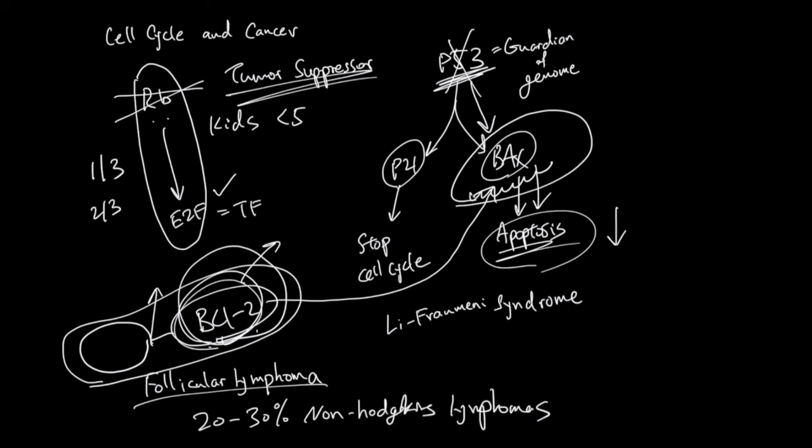Again, there are many more interactions between cell cycle and cancer because bad cell cycle makes cancer. But here I'm just telling you about RB tumor suppressor and P53 tumor suppressor because they have famous diseases associated with them.